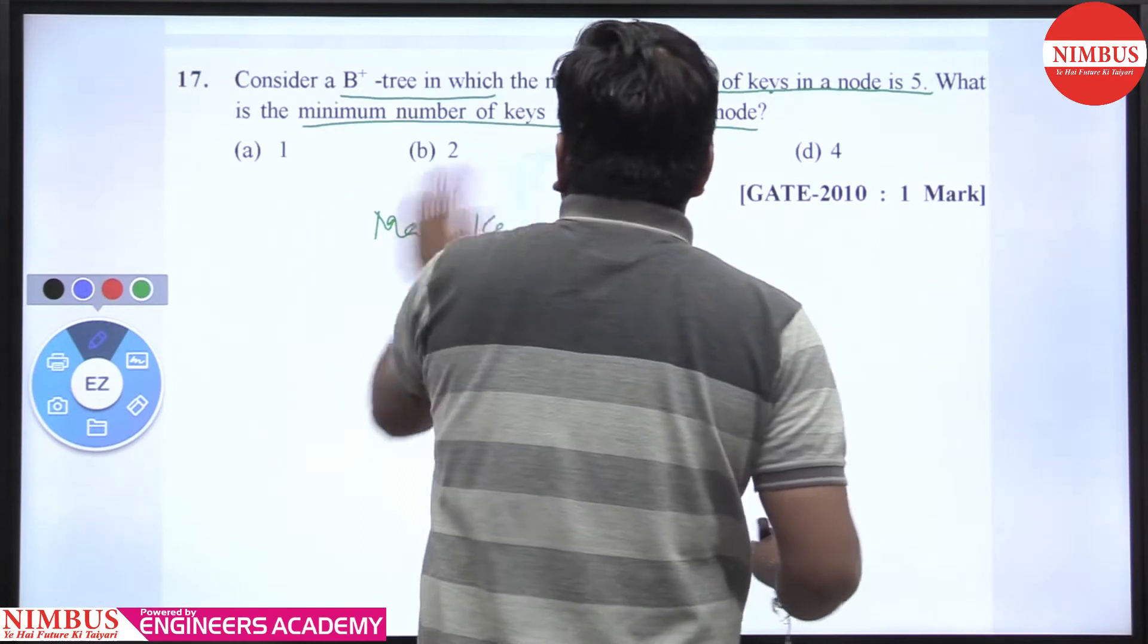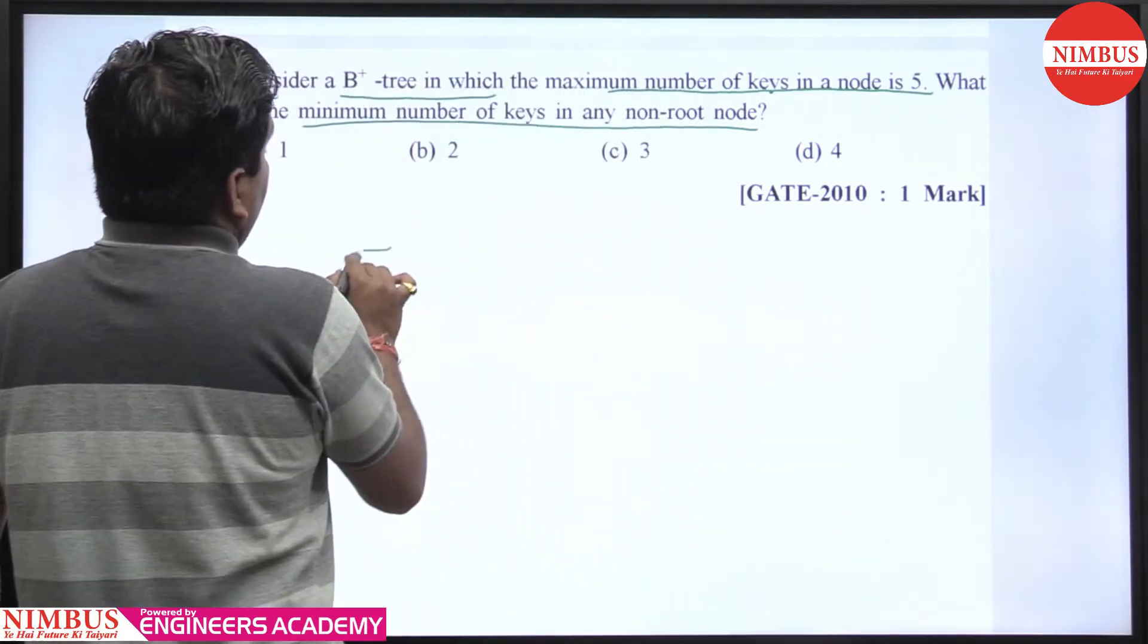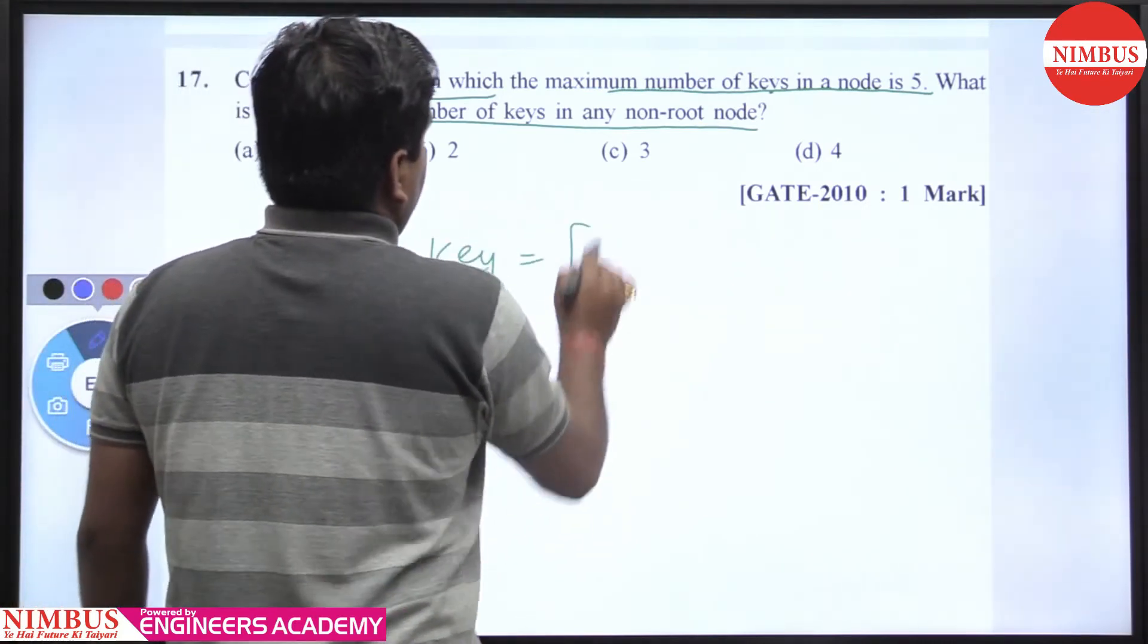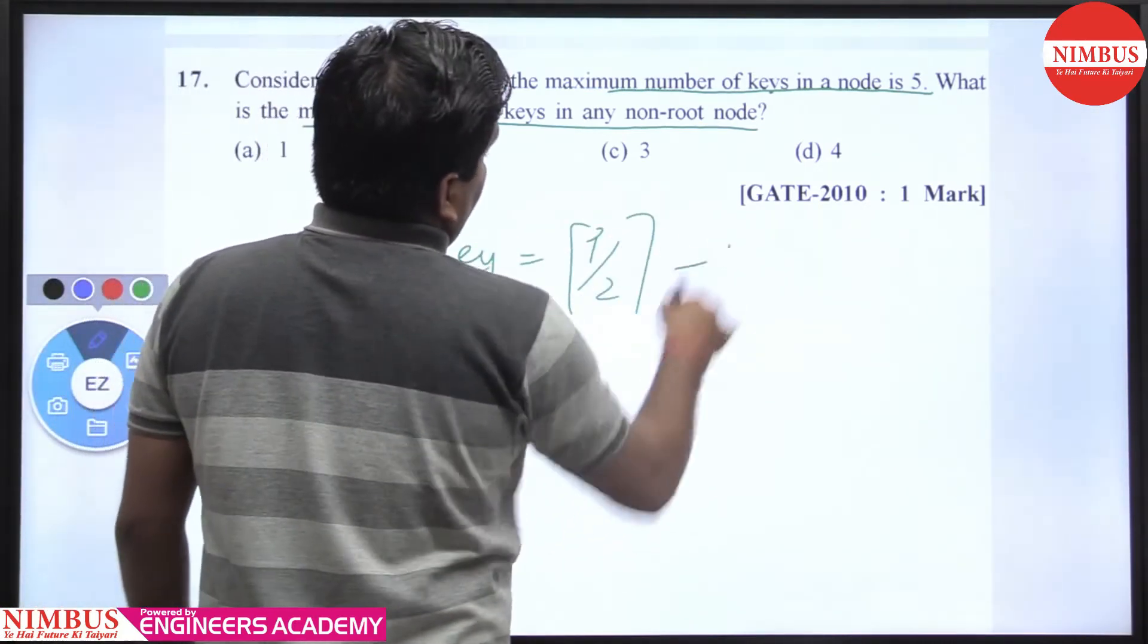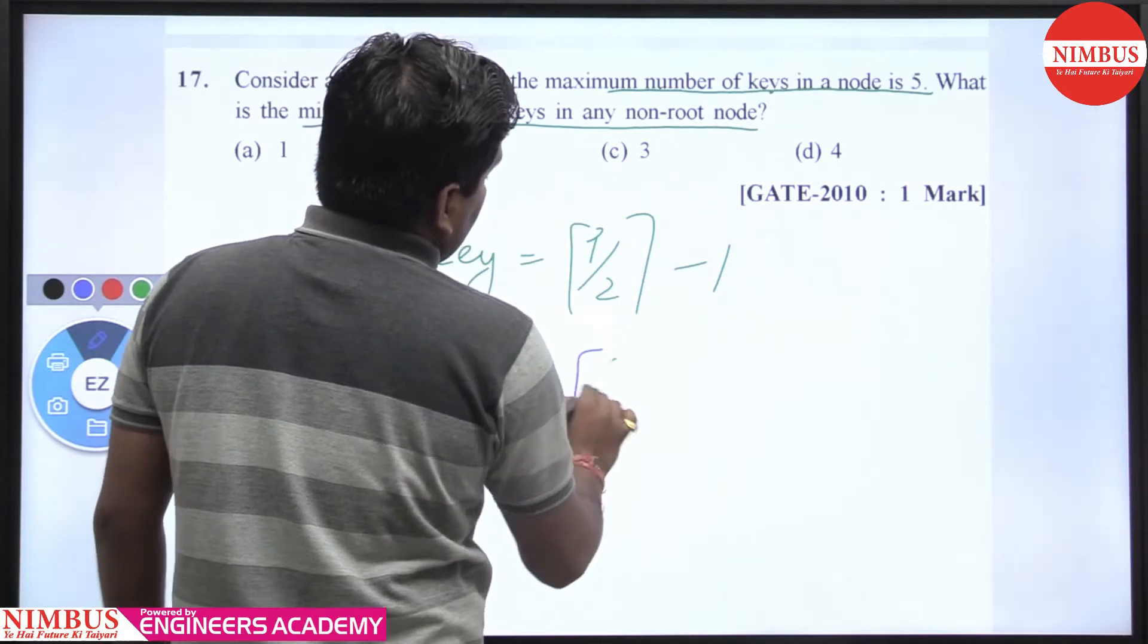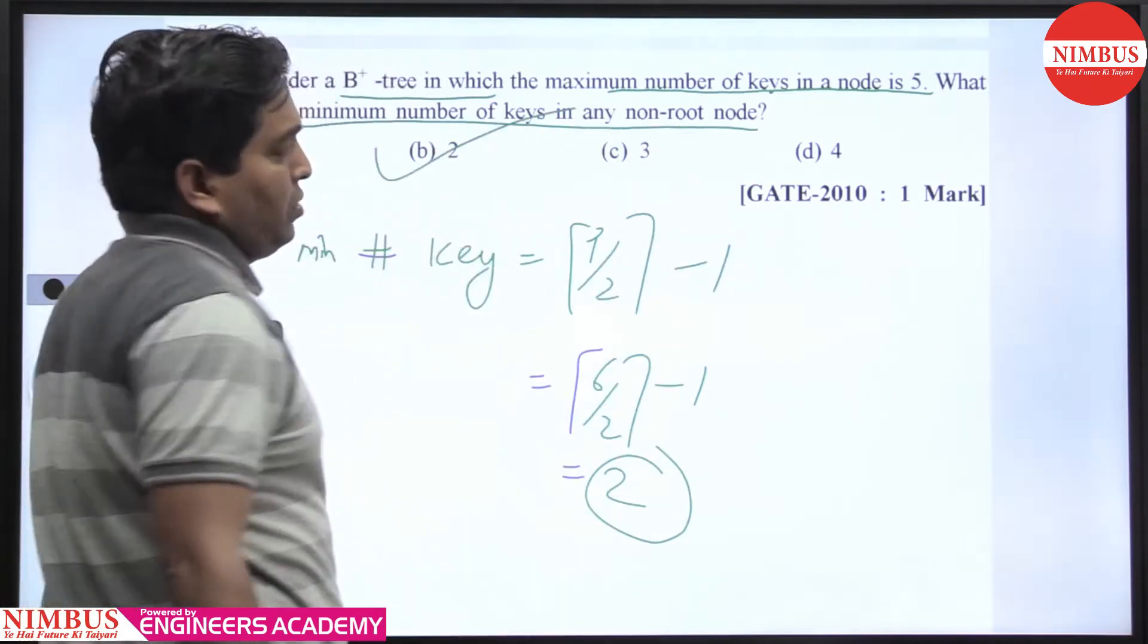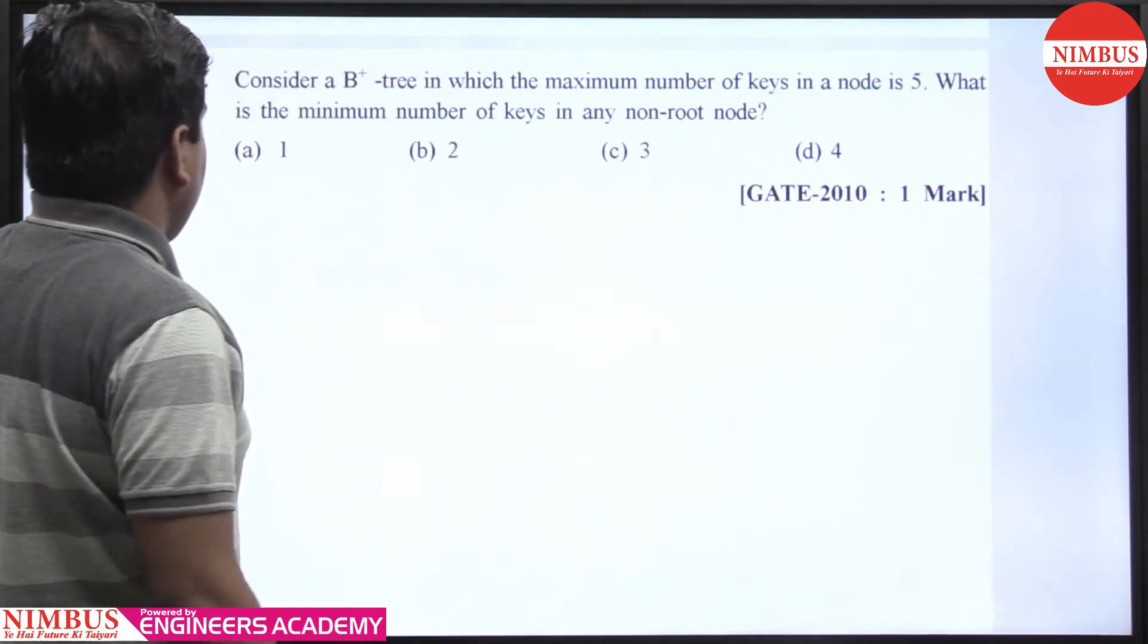What is the minimum number of keys? You can directly calculate the minimum number of keys using the ceiling value of p/2 minus 1. The order we are getting is 6, so that gives us 2. The answer is 2.